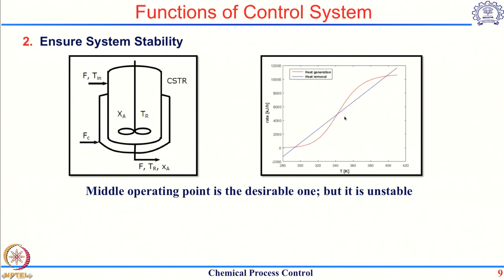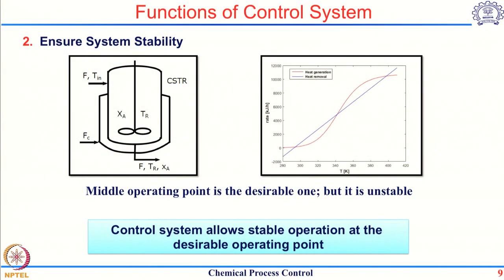So the job of a control system in this case is to ensure that in the case of disturbances, the system does not deviate away from this steady state but is brought back to the same steady state. This is done by manipulating the coolant flow rate FC. In case there is any disturbance, this controller will change FC such that the rate of generation of heat is always maintained equal to the rate of removal of heat, so that the unstable steady state can always be maintained. So sometimes the control system is also installed to ensure stability of an unstable operating point.